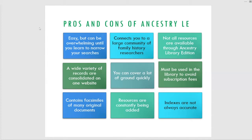The library edition normally has to be used in the library to avoid subscription fees, but right now Ancestry has kindly offered to let us extend it for home use. As long as you have a valid library card through the end of September, you can access Ancestry Library Edition from home. If you're accessing it from home, it's going to pop up with a screen asking for your library card number. If it throws an error saying the card is no longer active, give us a call — it could be a problem with your card or on our IT end.